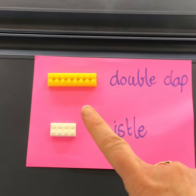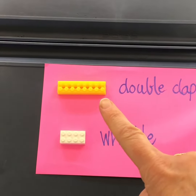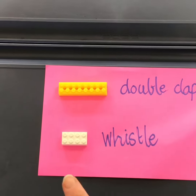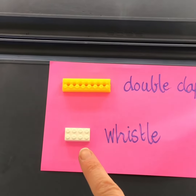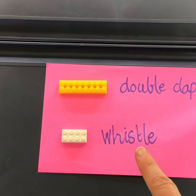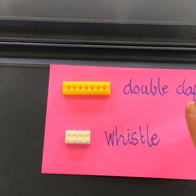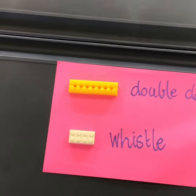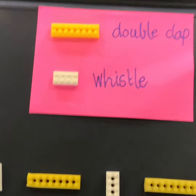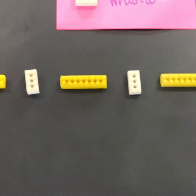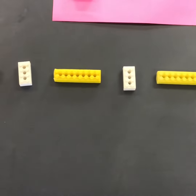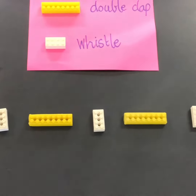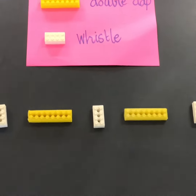I used a long piece of yellow Lego to represent my double clap, and a small white piece of Lego to represent my whistle. This is my key. I could have written the word key on here to remind myself. Then I've placed these exact pieces into my sound pattern, and here is my sound pattern represented with the Lego.